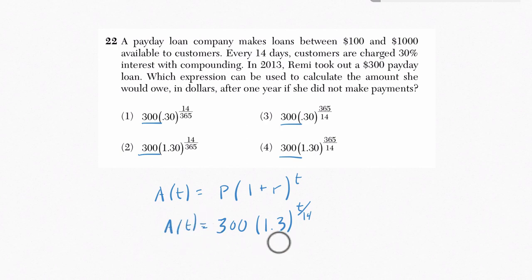Now before we look at the answer, let's just make sure we agree that this is in fact correct. And what I usually do to convince myself is I plug in some values. I say, well, I know that after 14 days there is supposed to be one payment compounded of 30%, right? Because every 14 days you charge 30%. So the first value I can plug in is when t is 14.